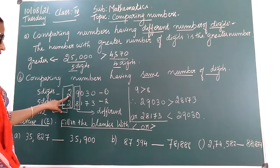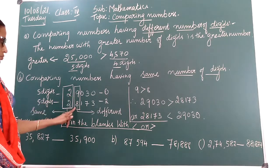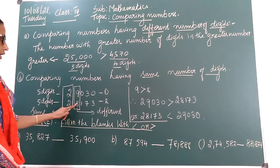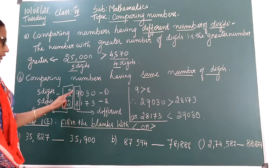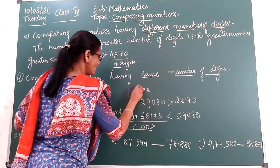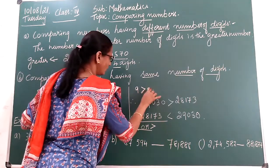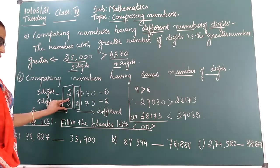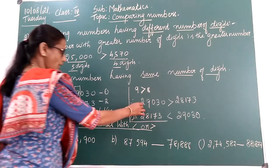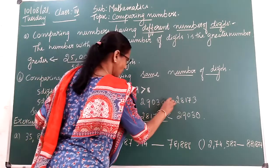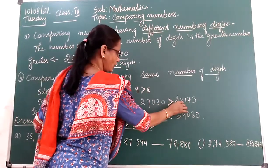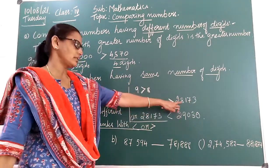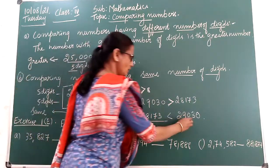This number is in the 10,000 place. Move to the 1,000 place. In the 1,000 place we have 9 and 8. 9 is greater than 8. Therefore, 29,030 is greater than 28,173, or 28,173 is less than 29,030.